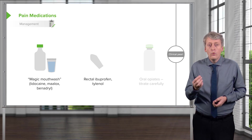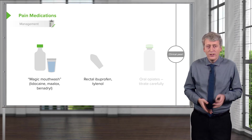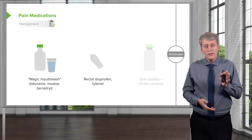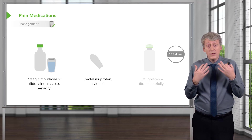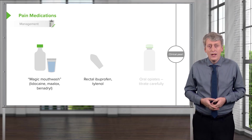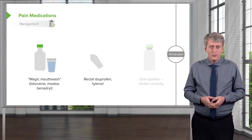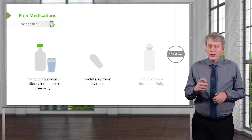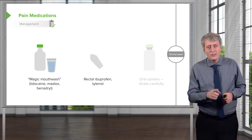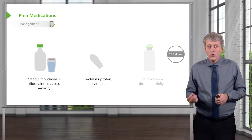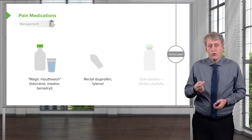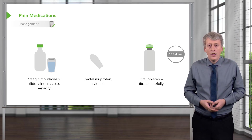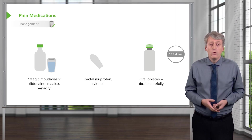We may use rectal ibuprofen or Tylenol — this is a neat trick. We can take liquid ibuprofen and Tylenol and squirt it into their rectum because they won't want to be swallowing pain medicines, and that can be very effective. An interesting clinical pearl is that rectal ibuprofen bypasses the liver because of the inferior rectal veins — they drain systemically — so there may be a little extra benefit for rectal ibuprofen. And often we'll give oral opiates or IV opiates if they really won't take anything at all.